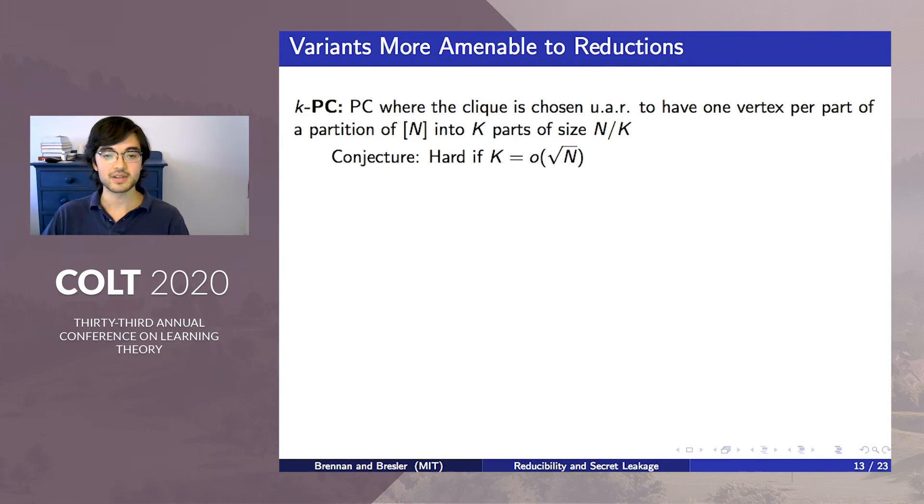The first is a k-partite variant of PC, where a partition of the vertices into k parts is revealed, and the planted clique is promised to have one vertex per part exactly. This variant seems to have a computational barrier that's still at k as root n.